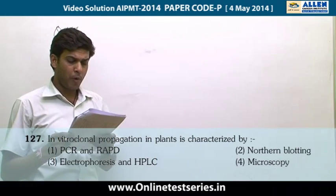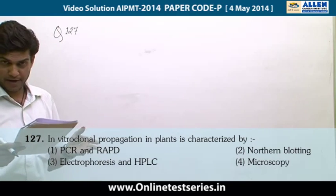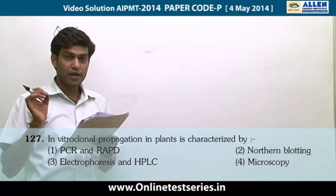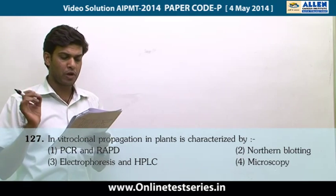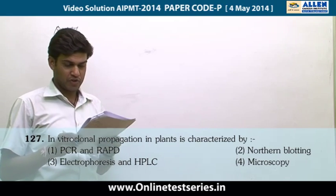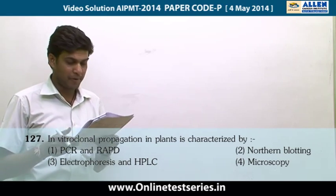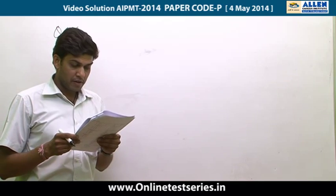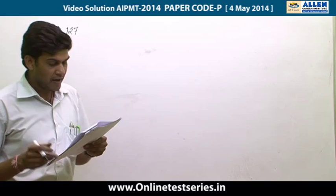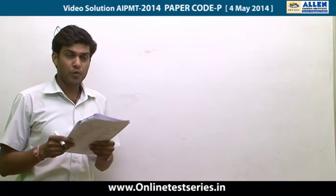Question number 127: In vitro clonal propagation in plants is characterized by which of the following? The options are PCR and RAPD, northern blotting and electrophoresis and HPCL, and the fourth option is microscopy.